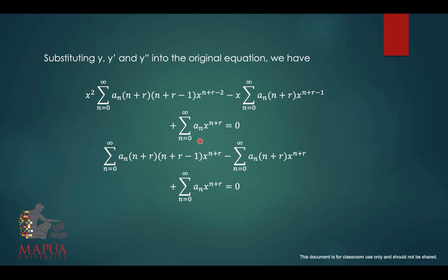Take note that each power of x is n plus r, so we can combine. And then the same index. So combining the coefficients, we will have the following using the identity property.